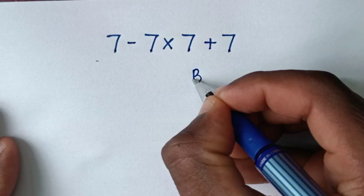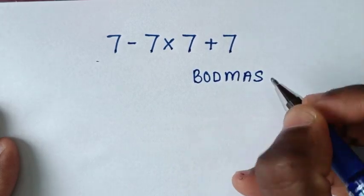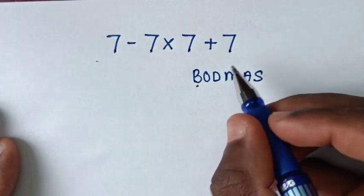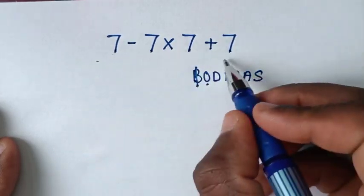Let me write the rule: BODMAS. B is for bracket - in this problem we don't have a bracket. O is for order or exponent - we don't have that either.